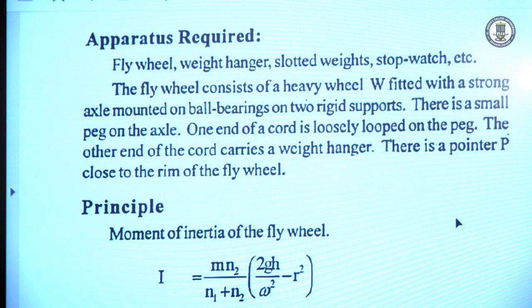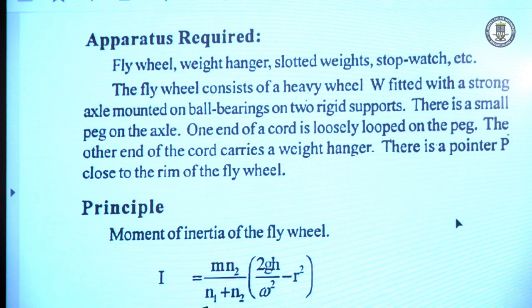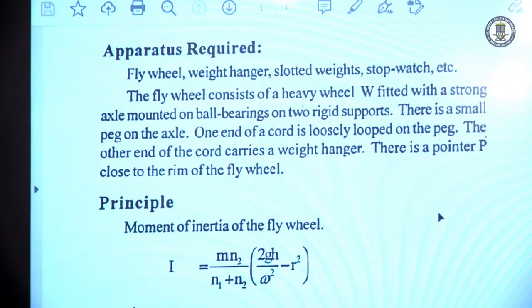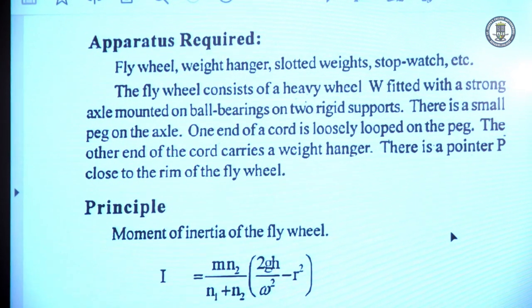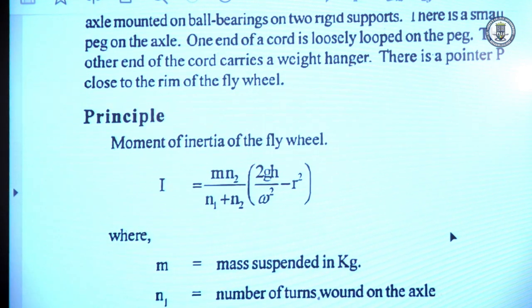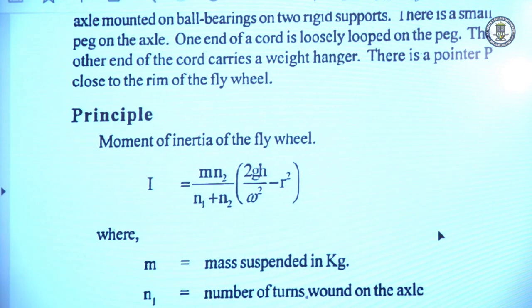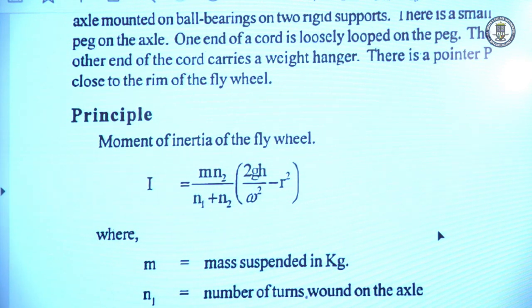Coming to the principle of our experiment: moment of inertia of the flywheel is calculated using the formula I = m·n₂ / (n₁ + n₂) · (2gh / ω²) − r². Now we will explain each term. Here m is the mass that we are suspending on the cord. n₁ and n₂: n₁ means the number of turns the cord is wound over the axle.